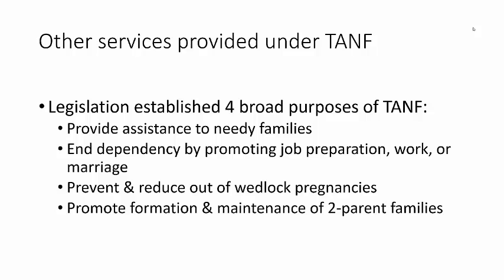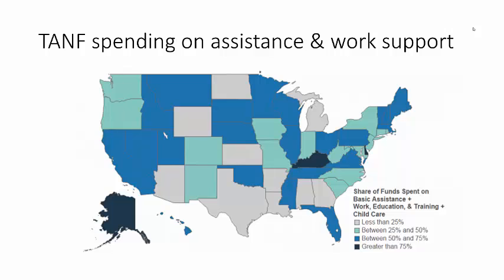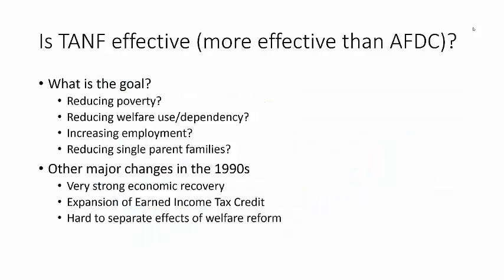In the case of TANF, it is clear that both purposes are part of their legislative mission. This map shows that states often spend a fair amount of their total TANF budget on items that focus on the pregnancy, marriage, and other parts of its mandate. Note that in this year, only three states, shown with the darkest shading, spent more than 75% of their funding toward basic assistance and related work support and childcare services.